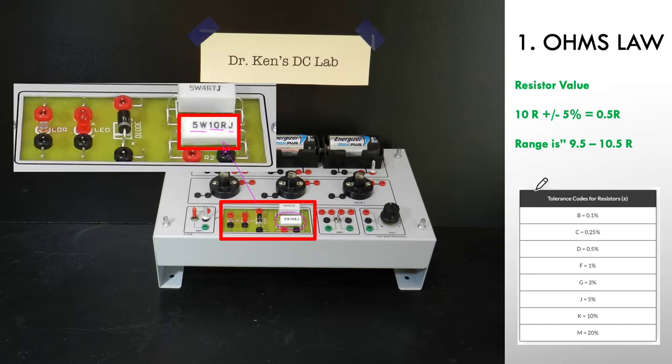Over on the right hand side here you'll see I've got a table for letter nominated tolerances. This is a J, so it's telling us we have a 5% tolerance. We know that we have 10R and it's plus or minus 5%. If we work out what 5% of 10 ohms is, it's 0.5 of an ohm. Therefore the range of our resistor is from 9.5 ohms, that's half an ohm down from 10, up to 10.5 ohms. So our first way to determine resistance is simply to be able to look at the resistor and read off the resistance value.